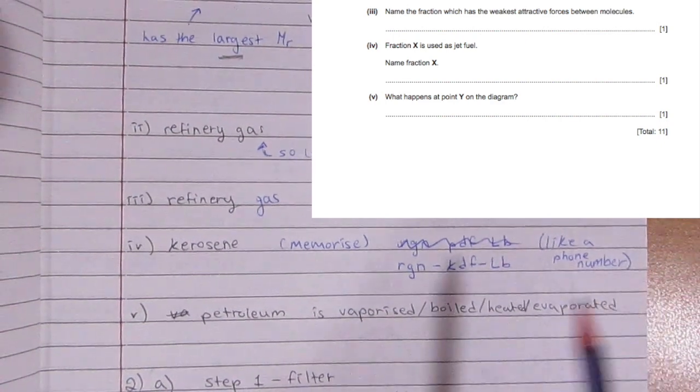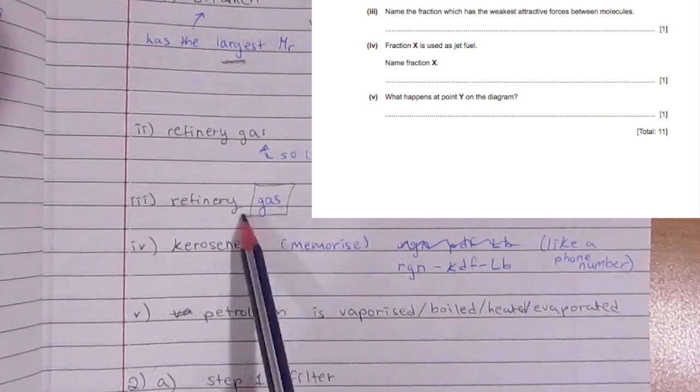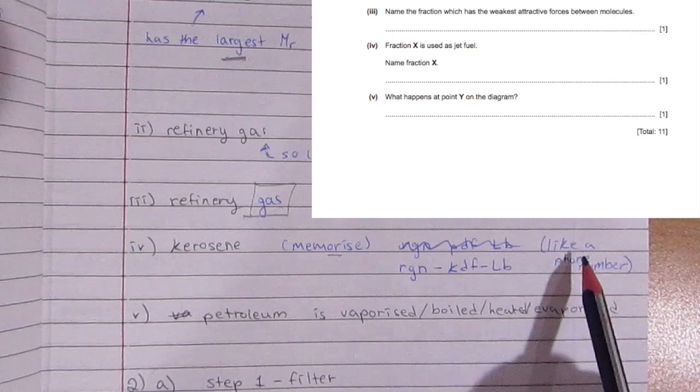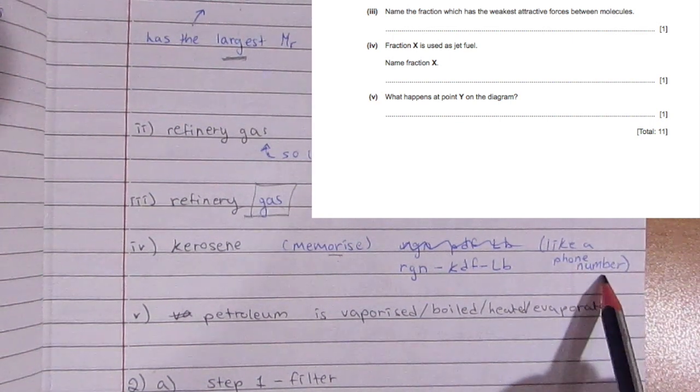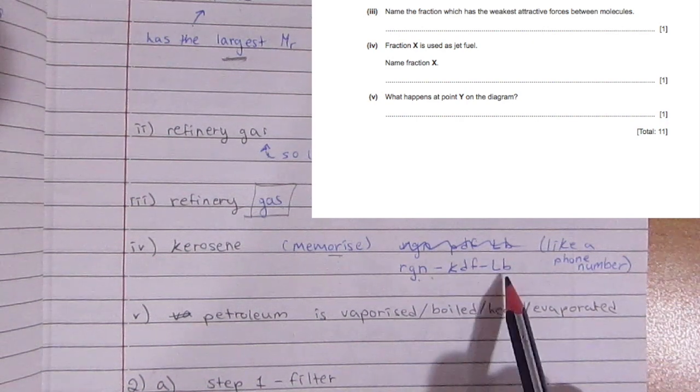Which one has the weakest force of attraction between molecules? That would be refinery gas—emphasis on gas—because gas molecules have weak forces of attraction between one another, which are usually neglected.